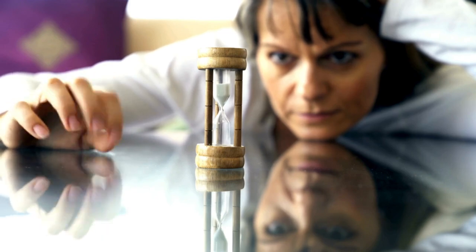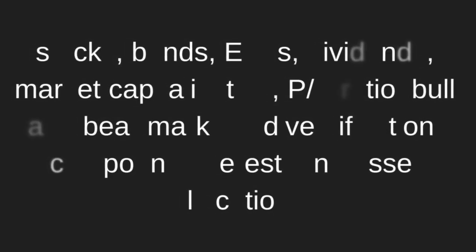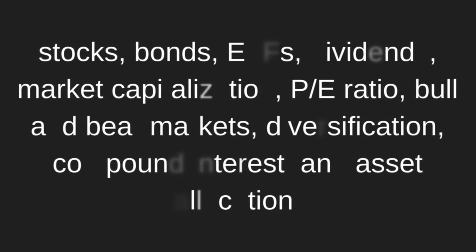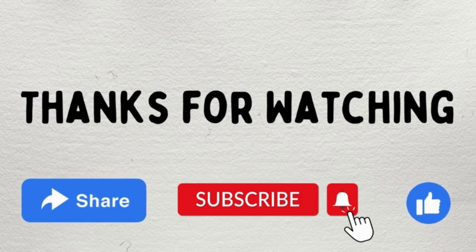Understanding key financial terms like stocks, bonds, ETFs, dividends, market capitalization, P/E ratio, bull and bear markets, diversification, compound interest, and asset allocation will aid in making informed investment decisions. Thanks for watching — be sure to like, share, subscribe, and check out the other videos on this channel.